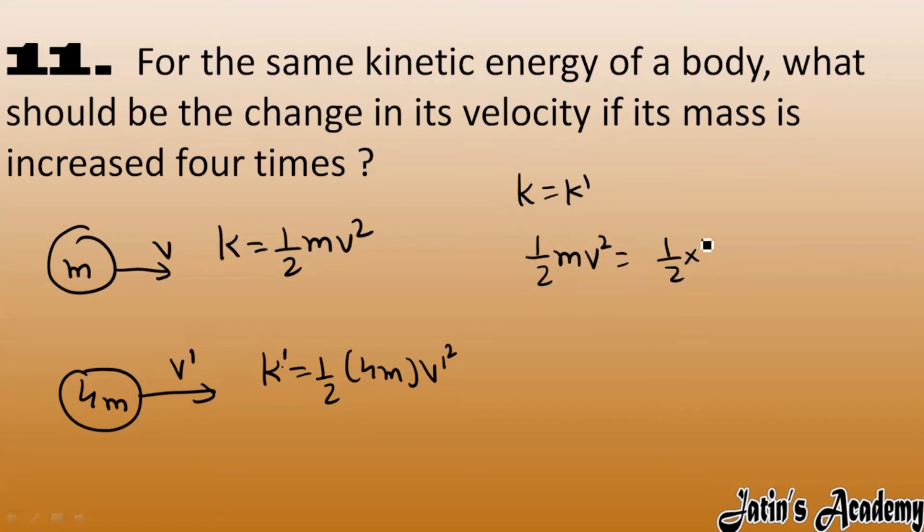Half and half cancel out directly, mass and mass cancel out, so this four is going on the left side. So four multiply divide here, so v dash square, now this square becomes a root, so here we got v square by four.